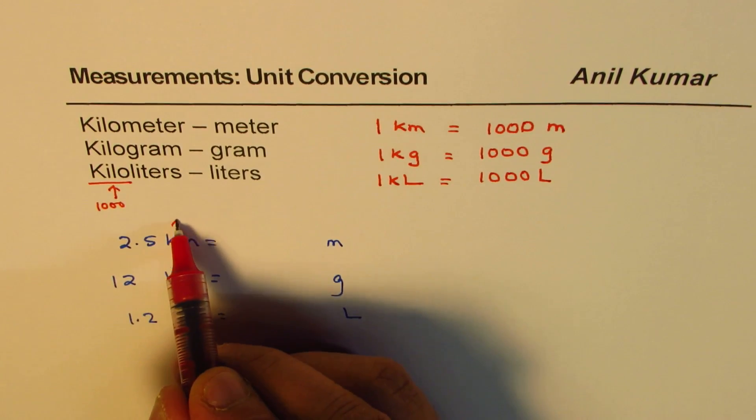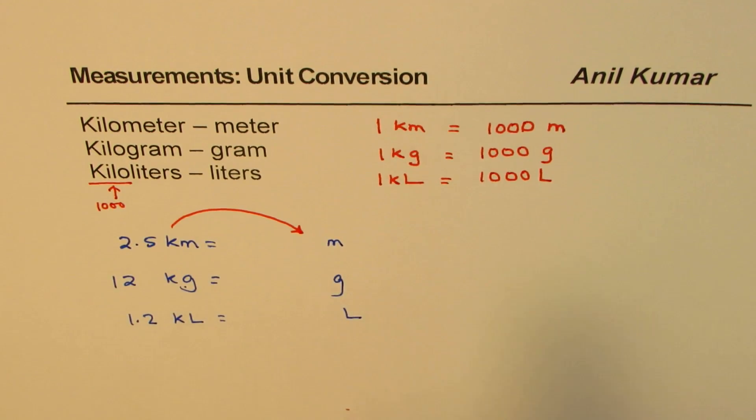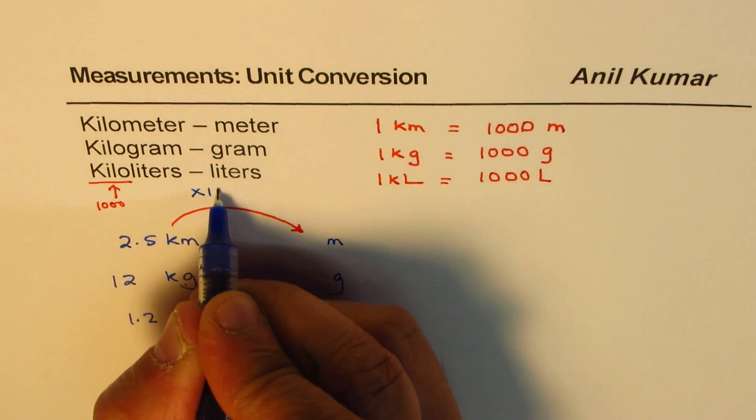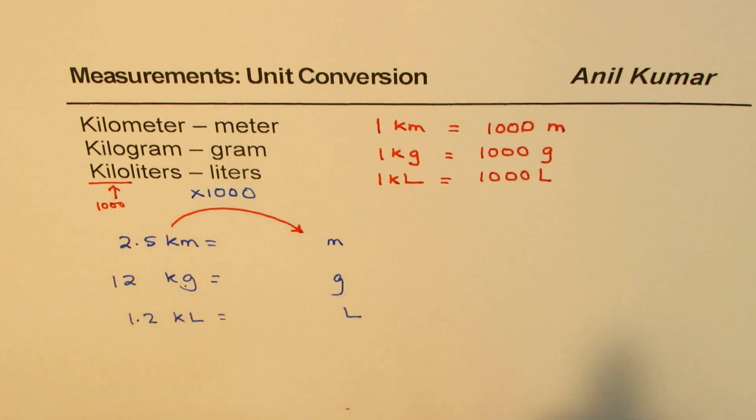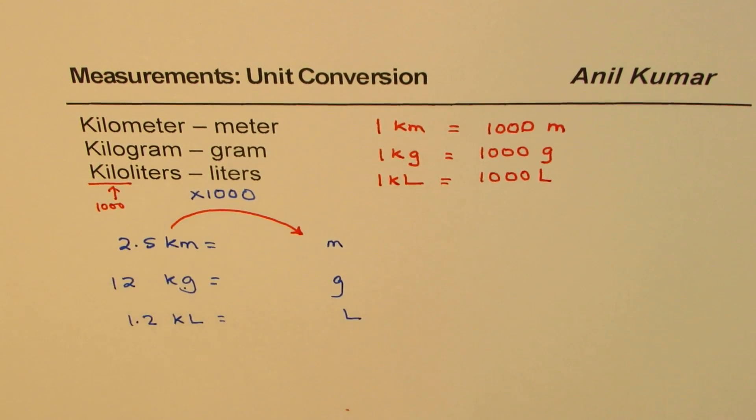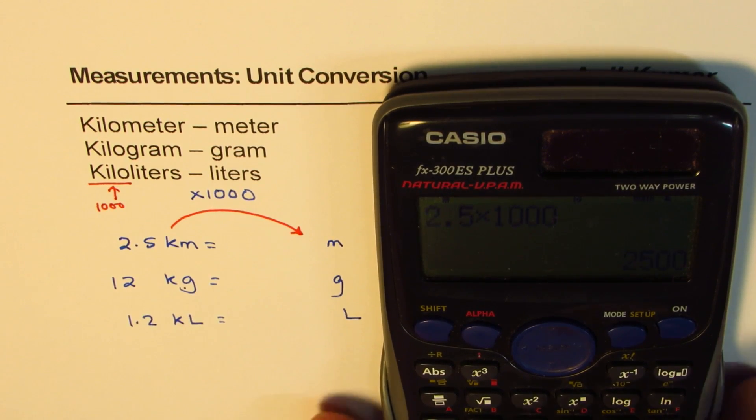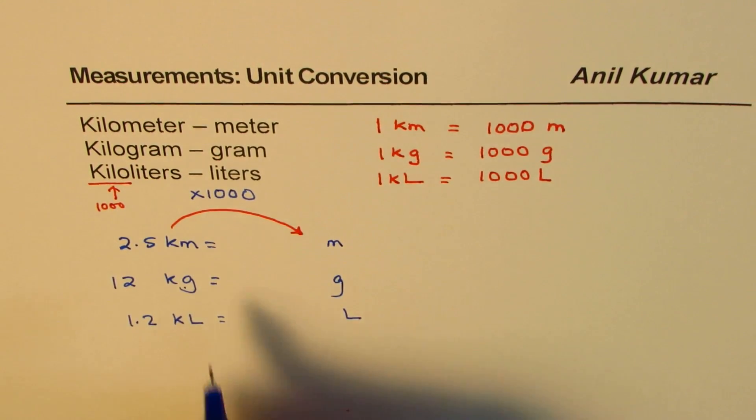Well, to convert from this to that, kilo means thousand, we should be multiplying by thousand. So in this case, you need to just multiply by thousand to get your answer. So 2.5 multiplying by thousand, you can use calculator. Let's do it. 2.5 times 1,000, right? So this is one way of doing it. 2,500.